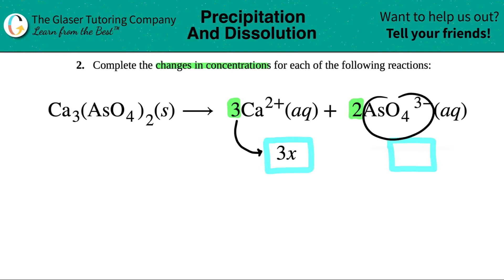Well the change is going to be some type of x value and the coefficient in front is a 2, so this would change by 2x. That's all that it is.